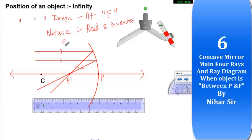And what is the size? So it's smaller because object is at infinity must be bigger than this. So size is smaller than the object.